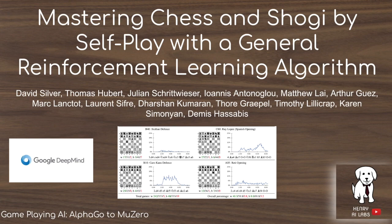This video explores the third paper in the series, going from AlphaGo to AlphaGoZero, and now the third paper, AlphaZero. AlphaZero is the first step towards making these algorithms more general, going beyond just the game of Go, and exploring the utility of this algorithm in chess and shogi.